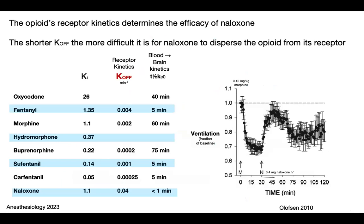The smallest value of KF is for carfentanil. If carfentanil attaches to the receptor, it is almost impossible to get it off the receptor — and especially impossible for naloxone to displace it. Other opioids also have a very low KF value: sufentanil has a low value, buprenorphine has a low value. I was also surprised by the low value of carfentanil.